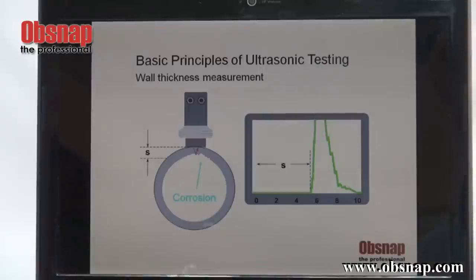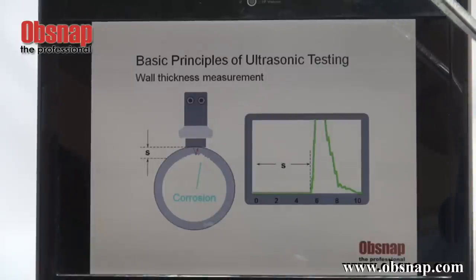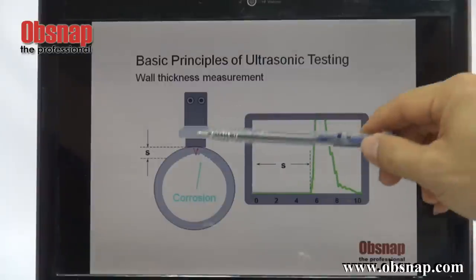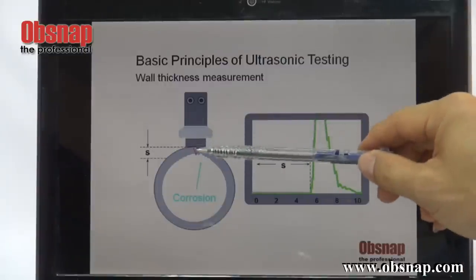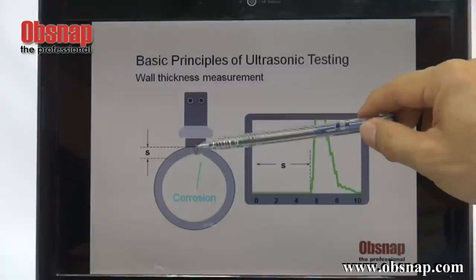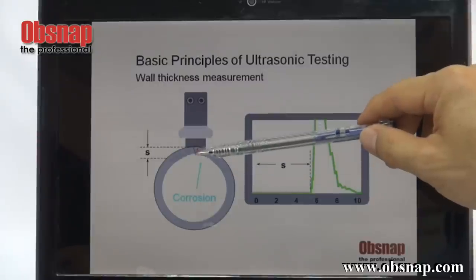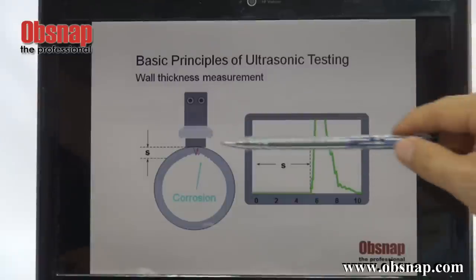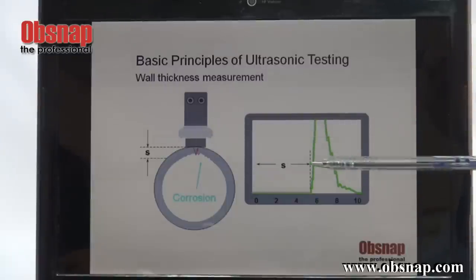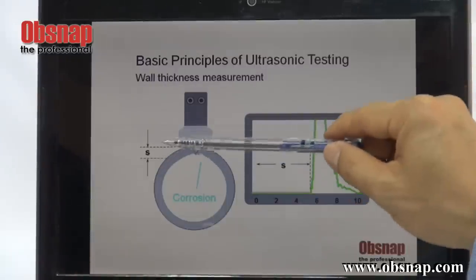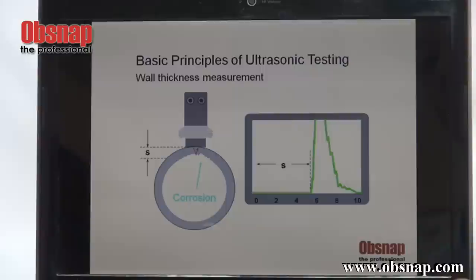This ultrasonic testing can also be used to measure the remaining wall thickness. We do that by measuring what is the thickness of the pipe that actually remains. This will indicate the remaining wall thickness.